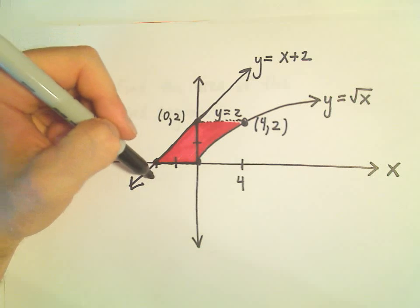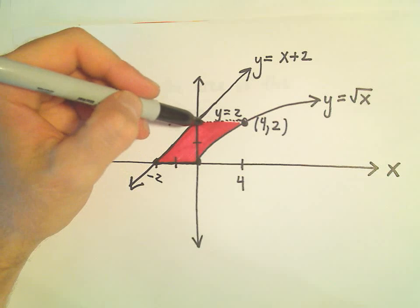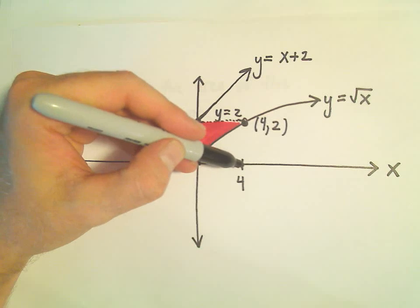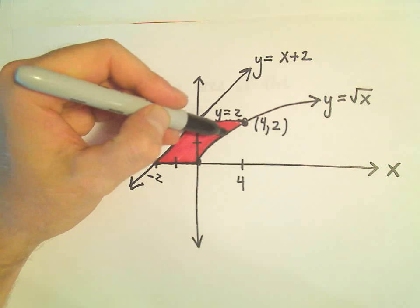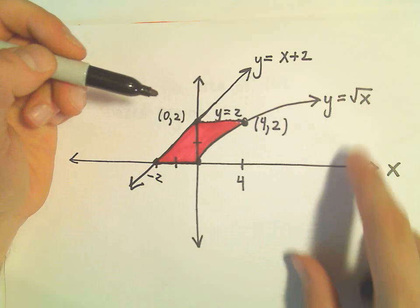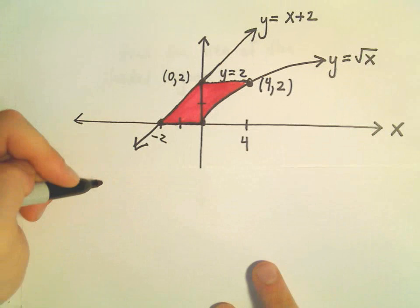That would be, and then we would go, it looks like, from negative 2 up to 0. But then we would have to break it up again and go from 0 up to 4, and we would have to take the function on top, which is y equals 2, and subtract the bottom one, which would be square root of x.